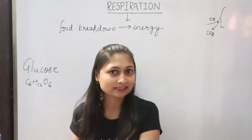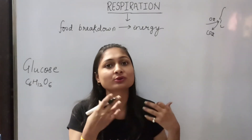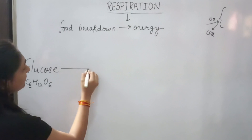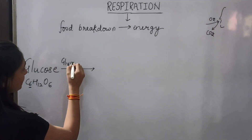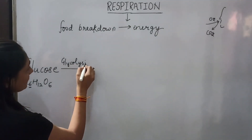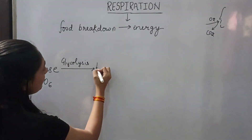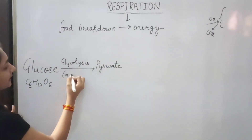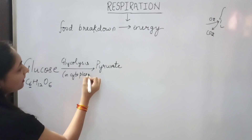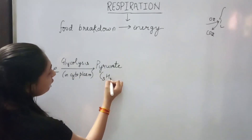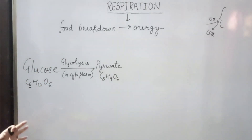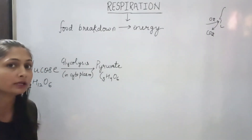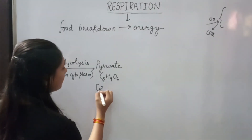Aerobic respiration occurs in the presence of oxygen, and anaerobic respiration occurs in the absence of oxygen. Glucose, which is a 6-carbon molecule, is broken down by the process of glycolysis. Glycolysis breaks glucose down into pyruvate. This process occurs in the cytoplasm of the cell. Pyruvate's formula is C3H4O3, so a 6-carbon molecule breaks down into 3-carbon molecules.